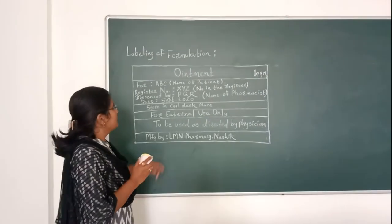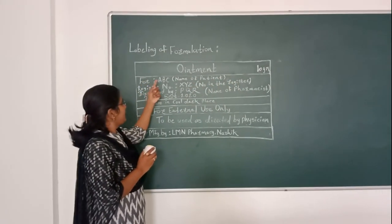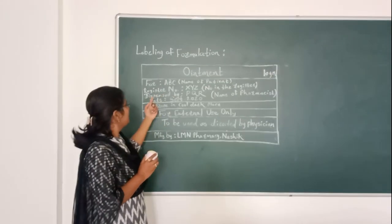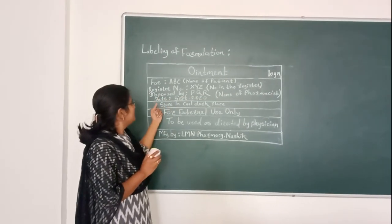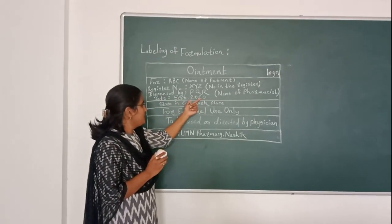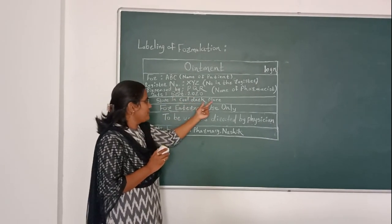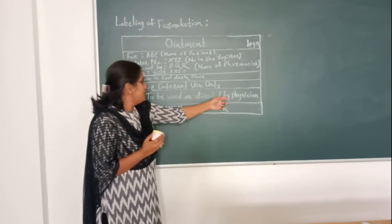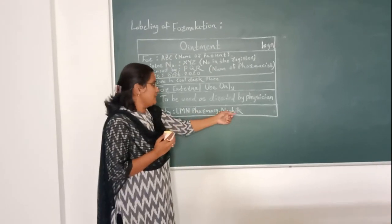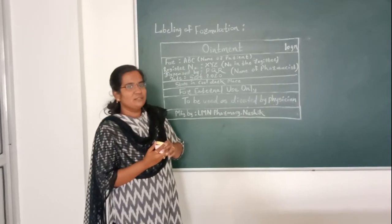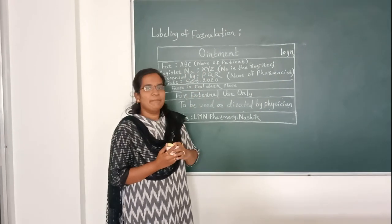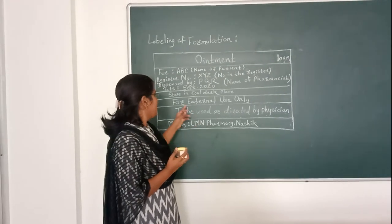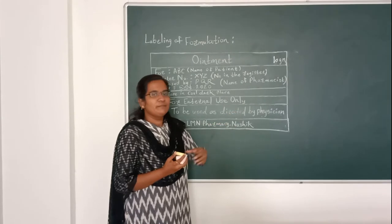Item 10 grams: name of patient ABC, register number XYZ, dispensed by name of pharmacist, date September 2020. Storage condition: for external use only, to be used as directed by physician. Manufactured by farms. The 10 grams of ointment is submitted in this white container for inspection. Special instruction on label: for external use only. Thank you.